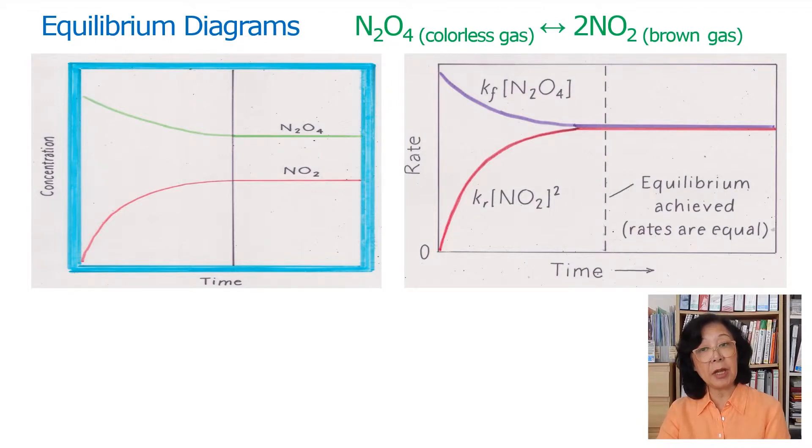If you look at the right-hand side diagram, it is rate versus time. The forward rate is represented by the blue line, which is forward rate constant KF times the concentration of N2O4. Initially, we have lots of N2O4, so that will be converted into NO2 and that will decrease the forward rate.